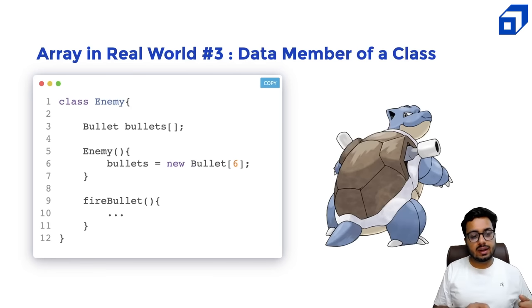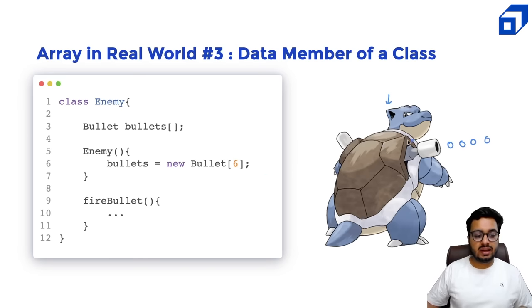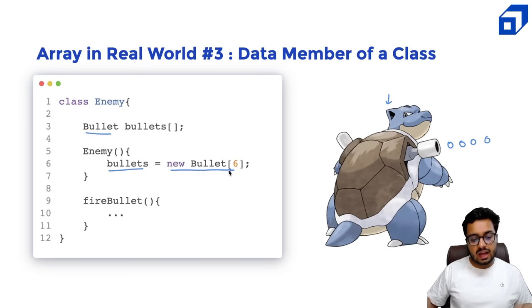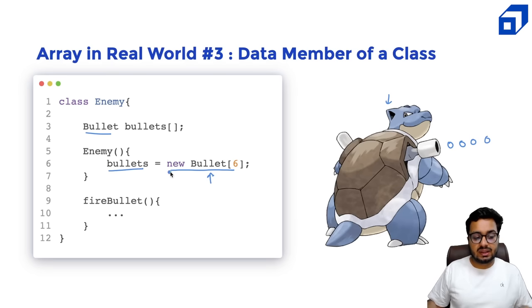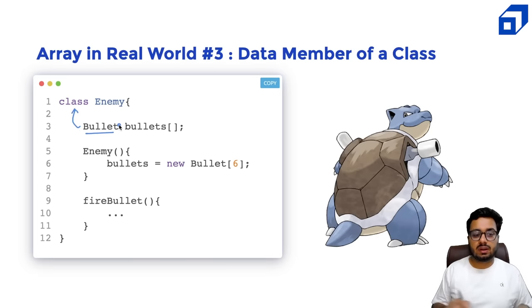Another use case: an array can also be a data member of a class. For example, you have an Enemy object with certain bullets it can fire. You can create an array of bullets where each bullet is of the type Bullet, and this array is created when the enemy is created — for example, giving this enemy exactly six bullets. When you fire a bullet, a particular bullet might get deactivated. So your array can be a data member of a particular class.